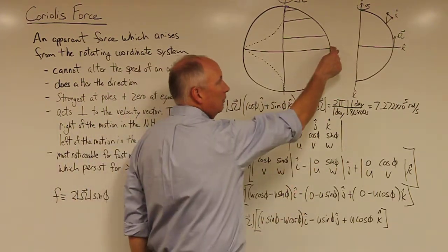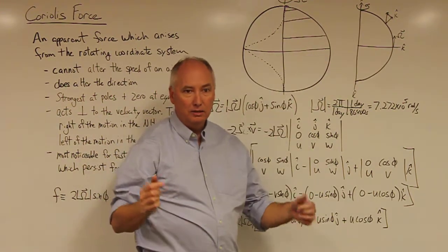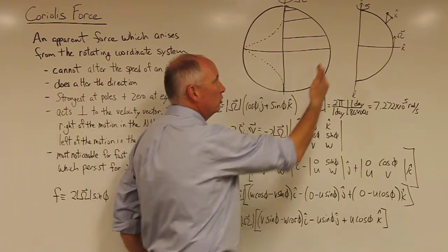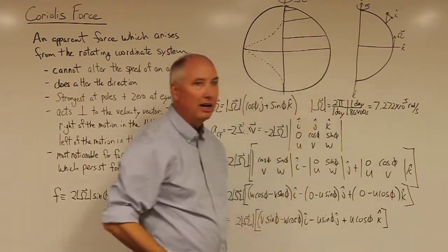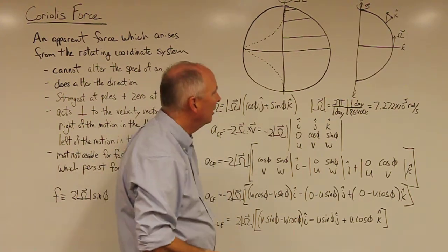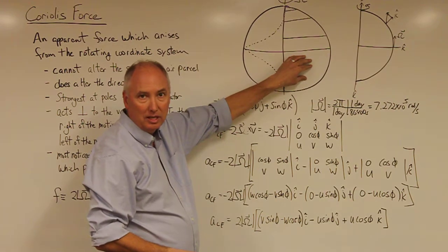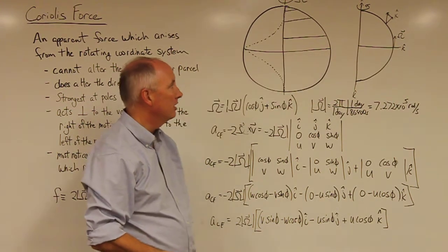So as you move from the equator towards the pole, your angular velocity needs to increase, which would actually cause a deflection in the east direction, which would be to the right of the motion. You can do the same argument for the southern hemisphere, but it would cause a deflection to the left in the southern hemisphere.